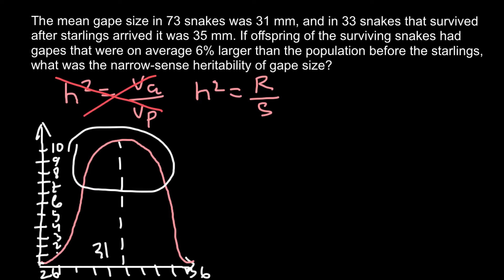Now imagine that some birds came and ate those snakes that have small gapes. If you think that all these phenotypes would be eaten, this is not true. What really happens in real life is that more of this would be eaten, but also some of these different phenotypes would be eaten. But as you see, distribution is not even. So more of this would be eaten than the rest.